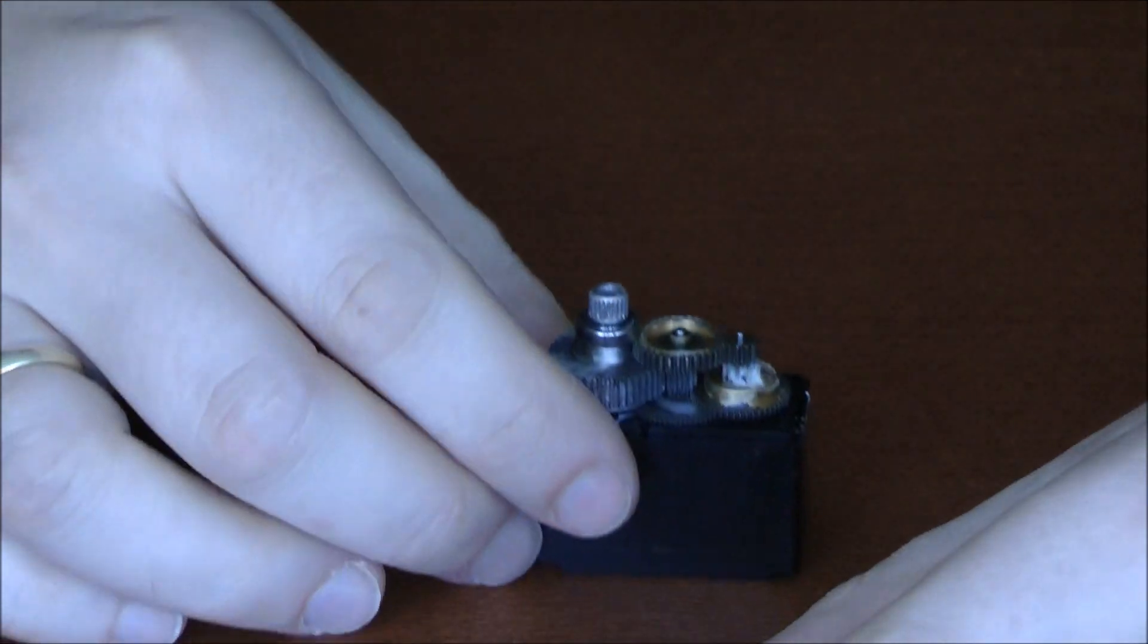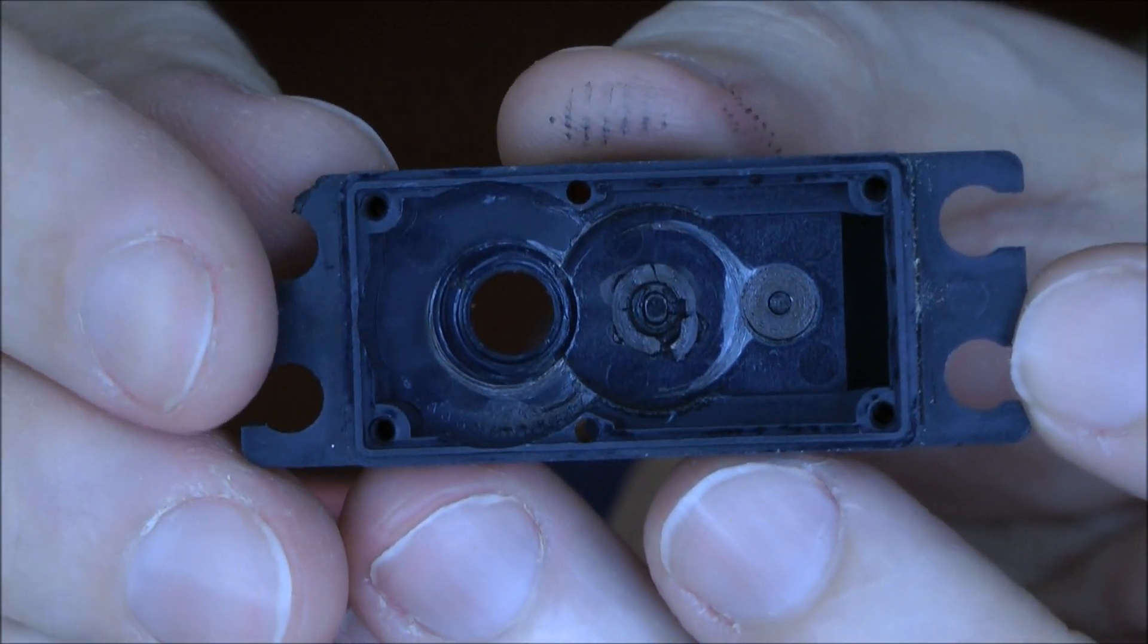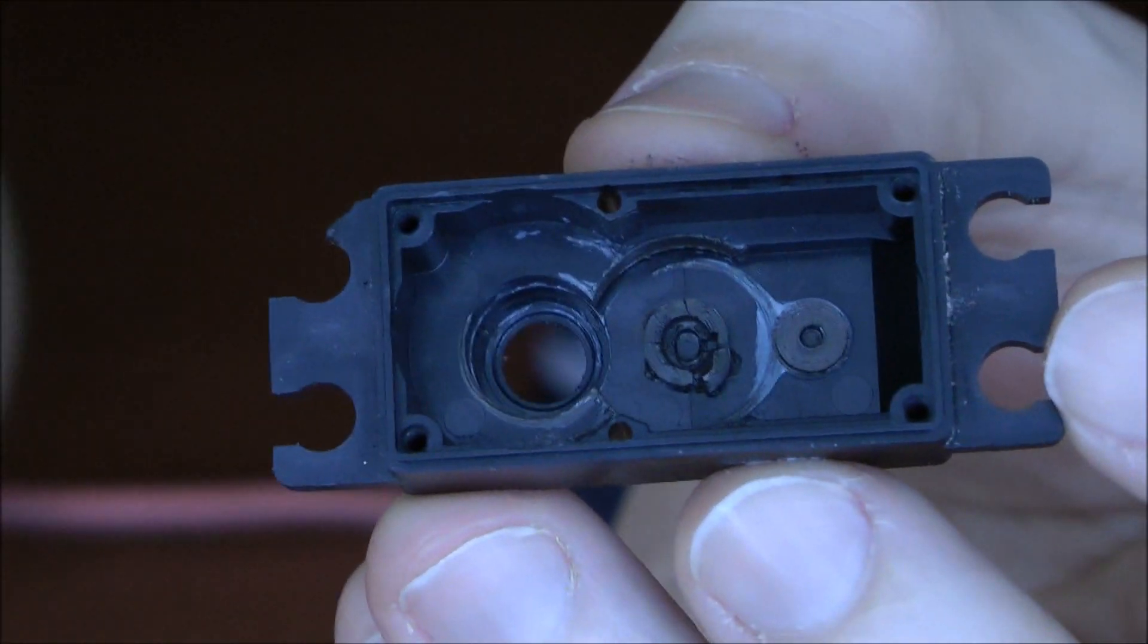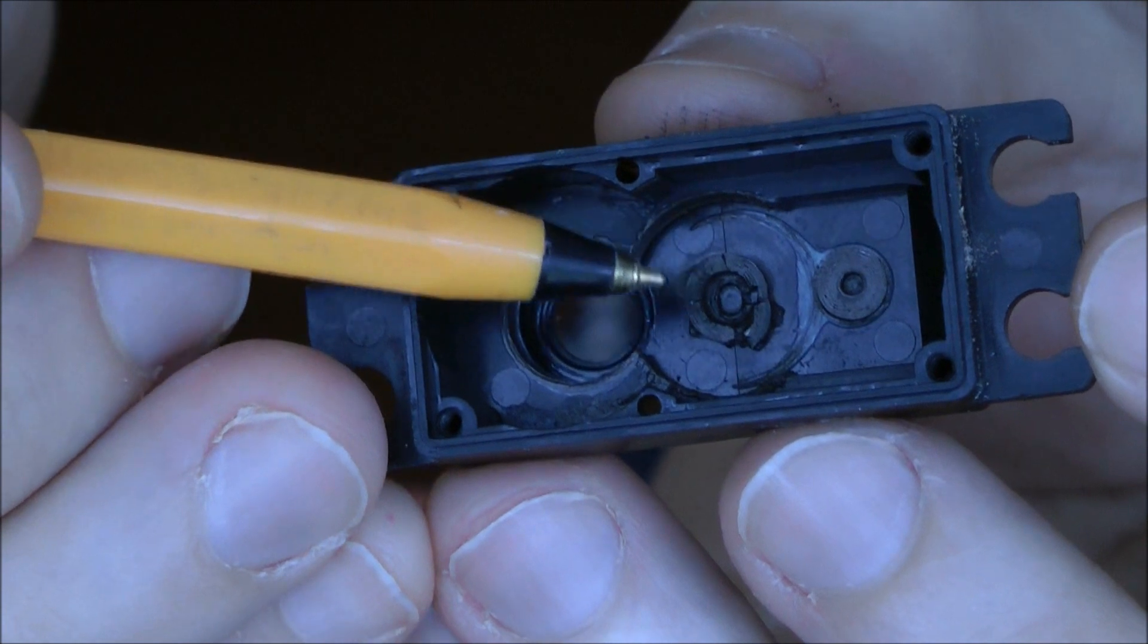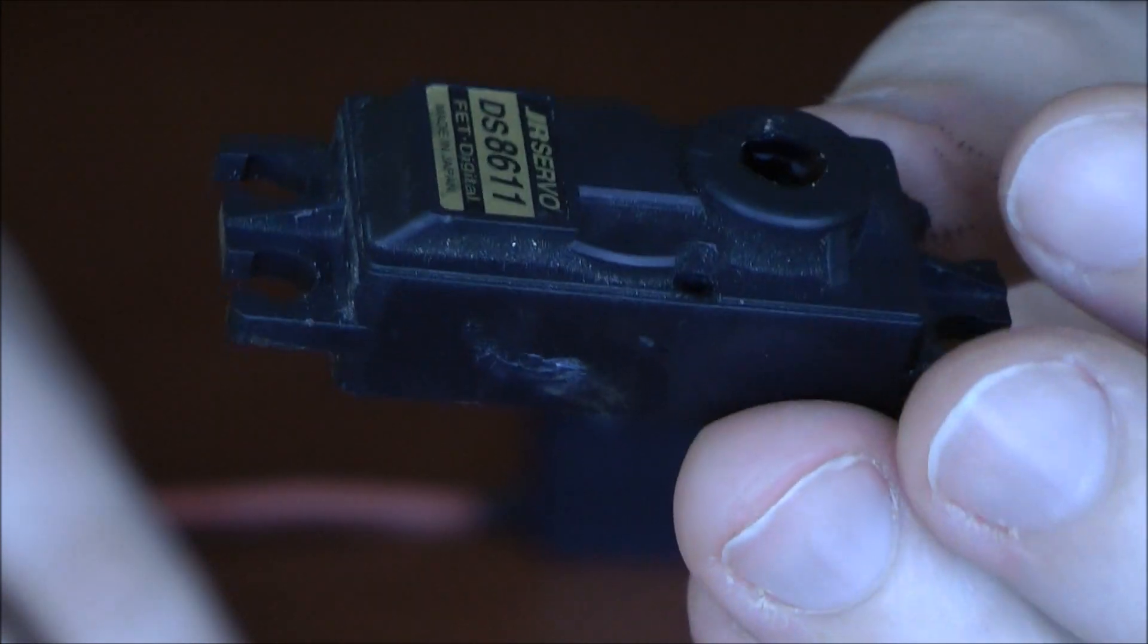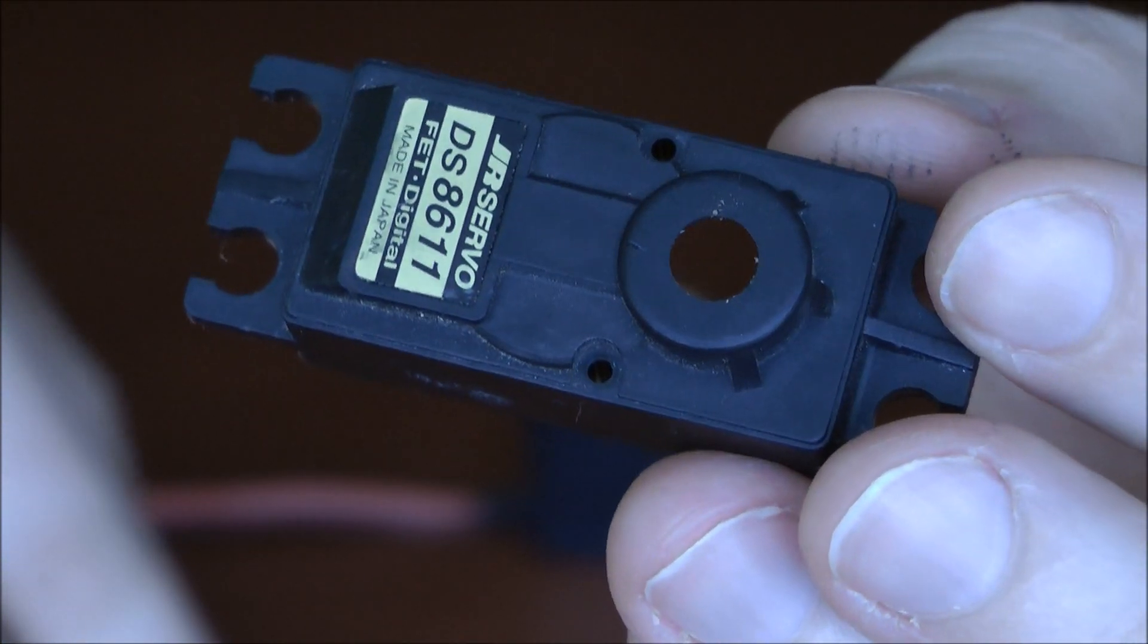JR knows this problem, as I said before, and developed some new top case. You can buy it. It has some support all around the bushing holder. Top case is about 7 to 9 dollars each.